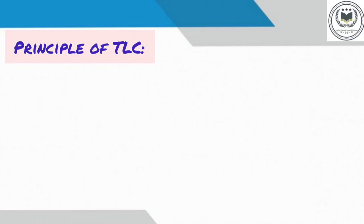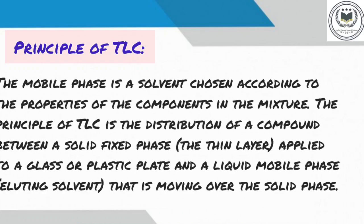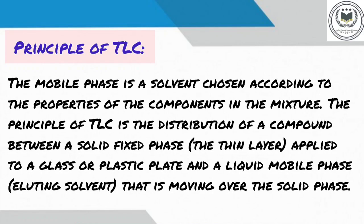Principle of thin layer chromatography: The mobile phase is a solvent chosen according to the properties of the components in the mixture. The principle of TLC is the distribution of a compound between a solid fixed phase — the thin layer applied to a glass or plastic plate — and a liquid mobile phase, that is the eluting solvent, that is moving over the solid phase.